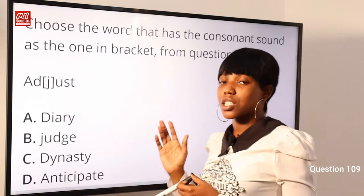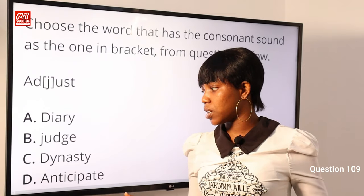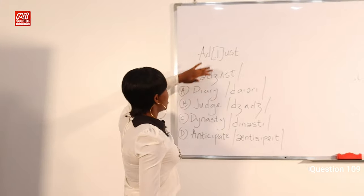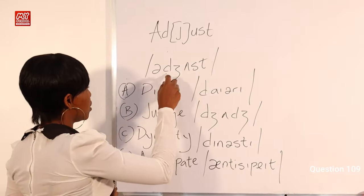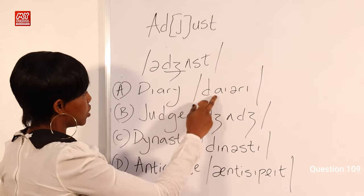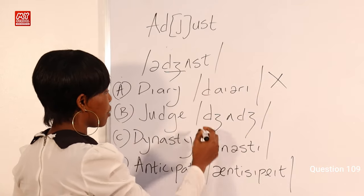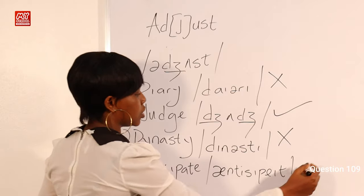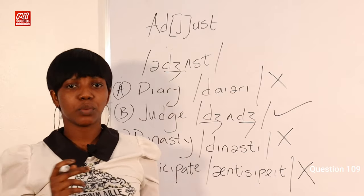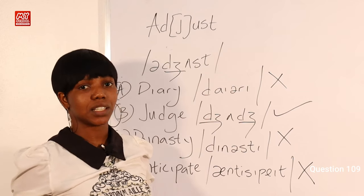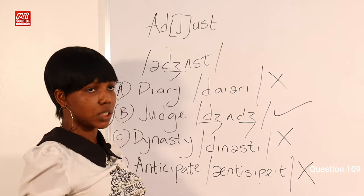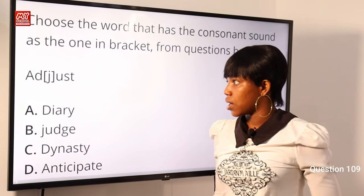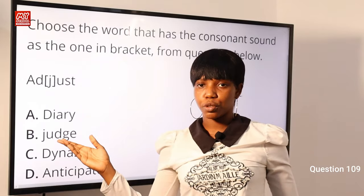Question 109: Choose the word that has the same consonant sound as the one in brackets. The word is 'adjust,' with the letter J in brackets, pronounced as the J consonant sound. Options: A) diary, B) judge, C) dynasty, D) anticipate. The J sound is not present in 'diary.' In 'judge,' it appears twice. It is not in 'dynasty' or 'anticipate.' Note: 'dynasty' in British English is pronounced differently from American English. Option B) judge is the correct answer.